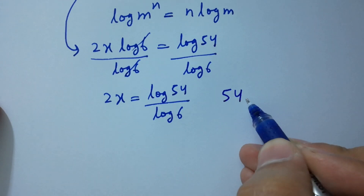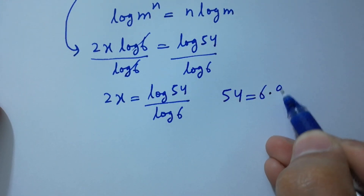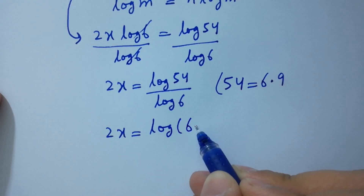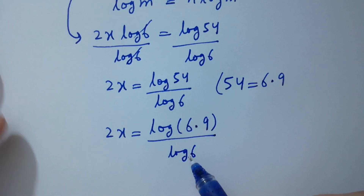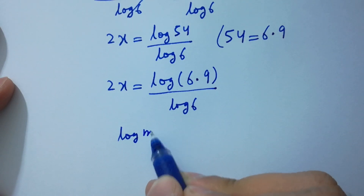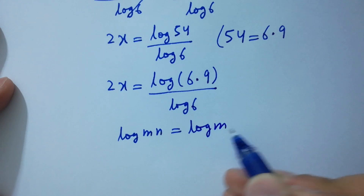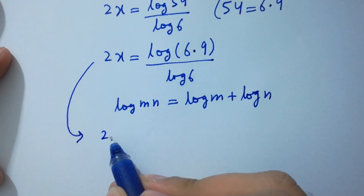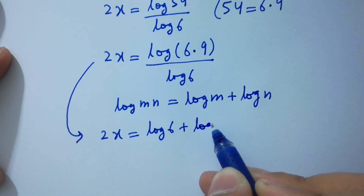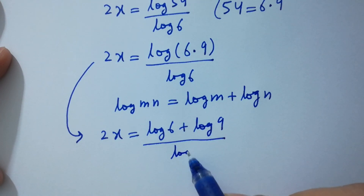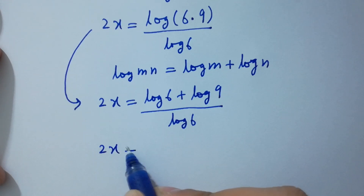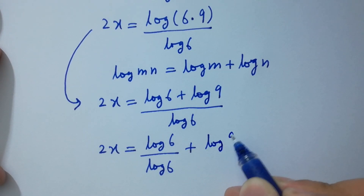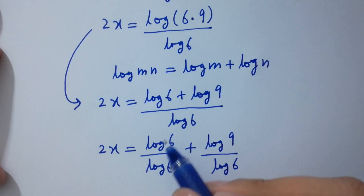Since 54 equals 6 times 9, we write 2x equal to log(6 times 9) over log 6. Using log(mn) equals log m plus log n, we get 2x equal to log 6 plus log 9, all over log 6. Log 6 over log 6 cancels.